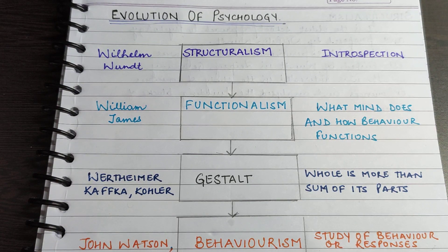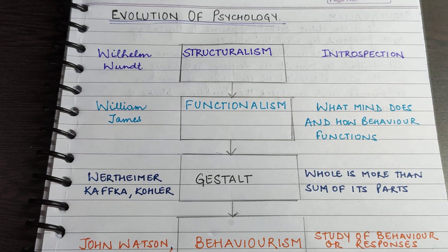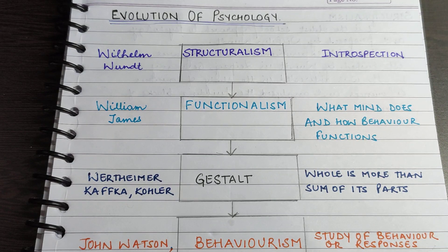The first school of thought is known as structuralism. This is the oldest approach to psychology. It was proposed by Wilhelm Wundt. Structuralists were interested in analysis of the human mind, its components, and its structure — that is why the name structuralism. They were interested in conscious experience and wanted to study the building blocks of the mind, that is, what constitutes the mind. They used introspection as a method to study mental processes and experiences.